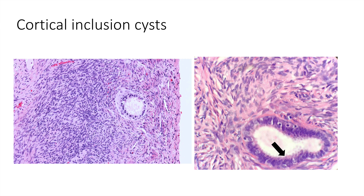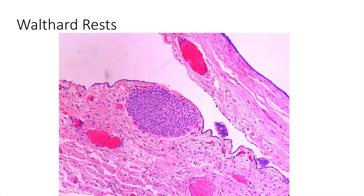Cortical inclusion cysts are presumed to be invaginations of the surface epithelium. They can show cilia, as in the picture on the right. Walthard rests have been suggested to represent urothelial rests within the gynecologic tract. They're often located in paratubal or hilar tissue and can become cystic and even show mucinous change.